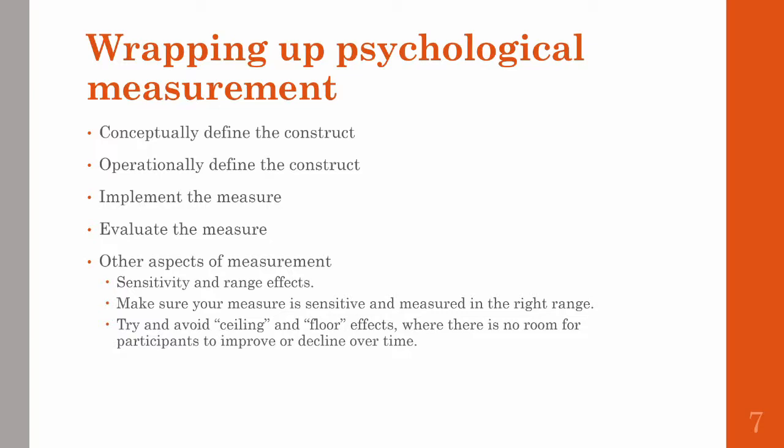A final note: be sure to consider sensitivity and range effects. You want your measure to be sensitive enough to pick up the measurements you want to study. If an experimental drug has small but consistent effects on response times on the scale of, say, 50 milliseconds, you need to make sure you use a device that records response times on the scale of milliseconds, not seconds, or else you'll miss the entire effect of the drug.